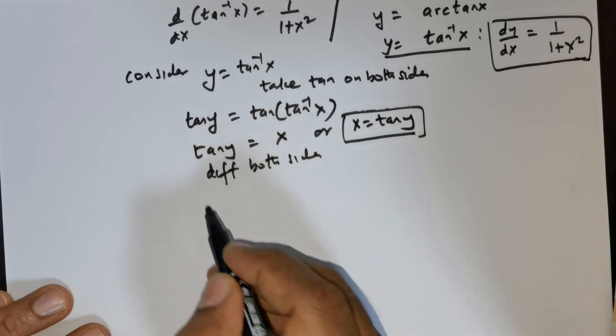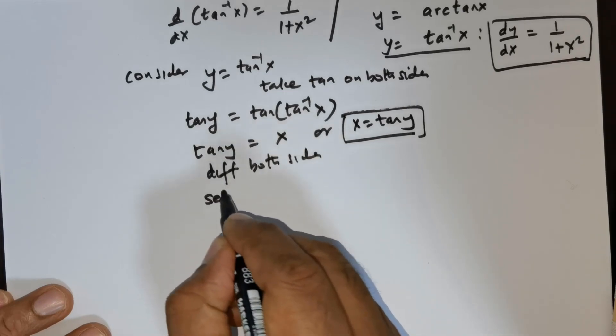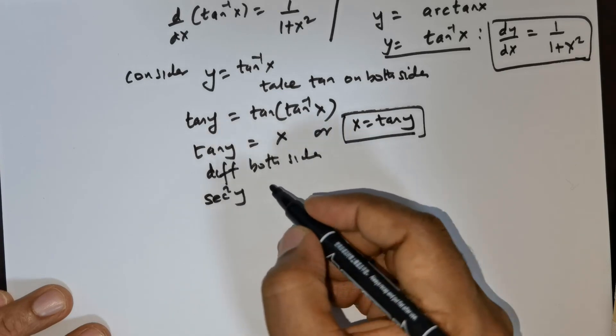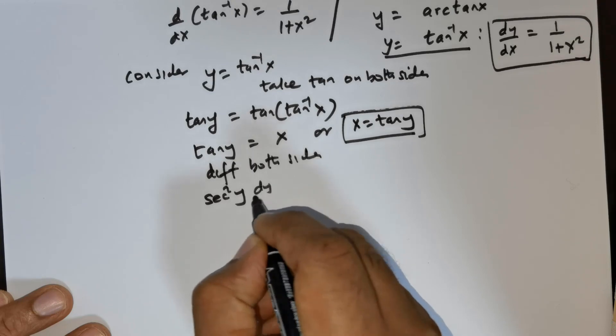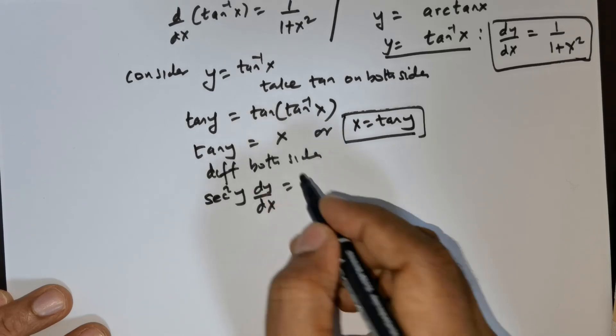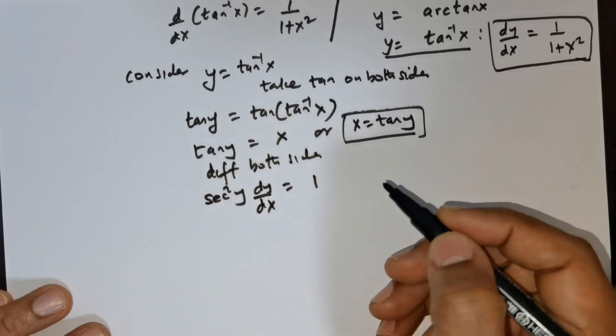Differentiation of tan would give me secant squared y times differentiation of y, that is going to be dy/dx. Now differentiation of x is going to give me 1.